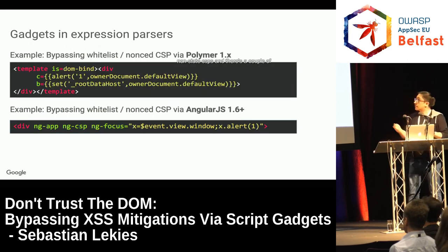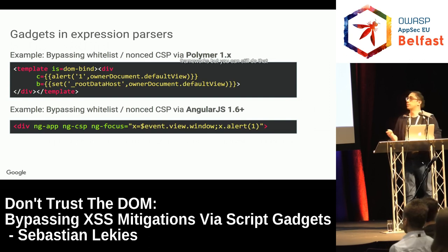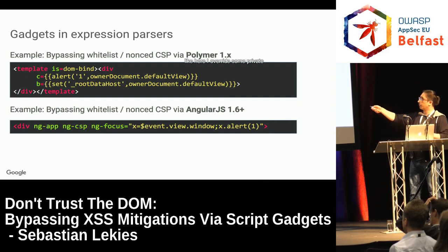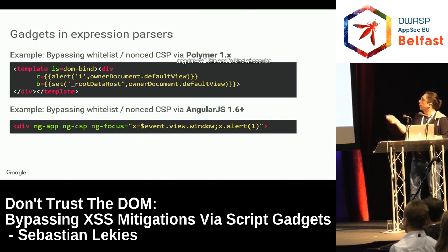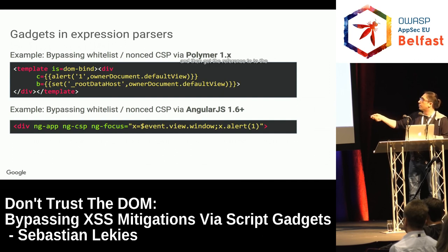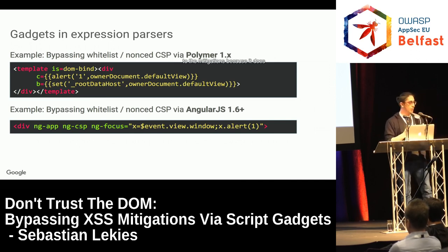There are a couple more examples. In Polymer, I overwrite a private property of the expression parser and assign it the window object, then call the alert function which is evaluated against this root data host — which is now window. In AngularJS, we take the event object, get a reference to the window, and call alert on that window. Angular makes it invisible to mitigations because it reparses the whole thing and executes it on our behalf.